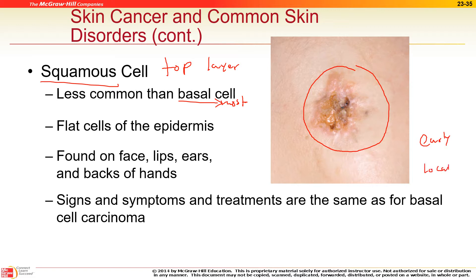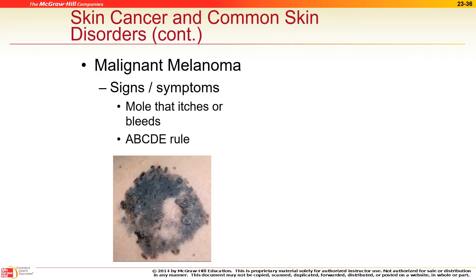As long as squamous cell carcinoma is caught early and localized, you can remove or freeze it. If it spreads, it becomes dangerous. Bob Marley, for example, died from skin cancer in his toe. Melanoma is the deadliest form — use the ABCDE rule to identify if a mole might be malignant.